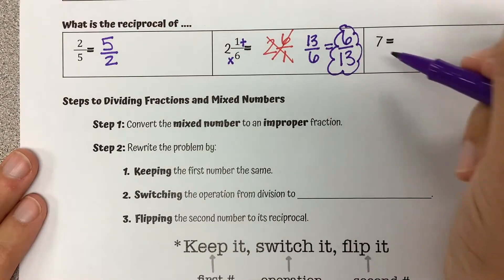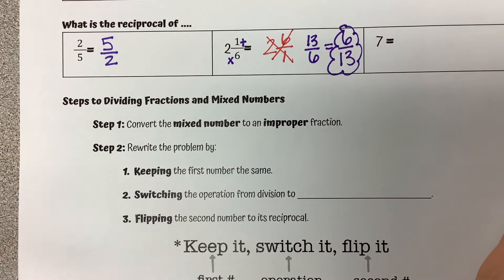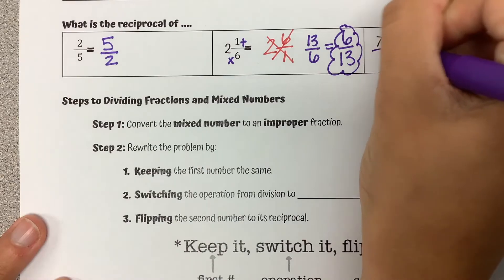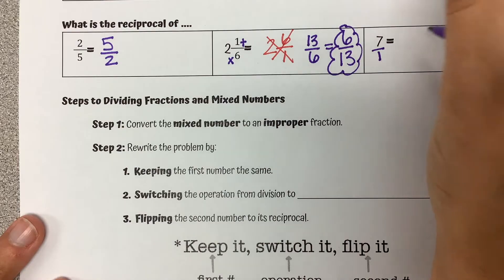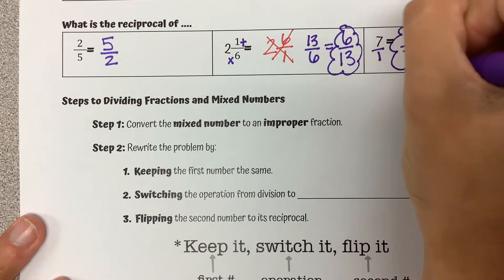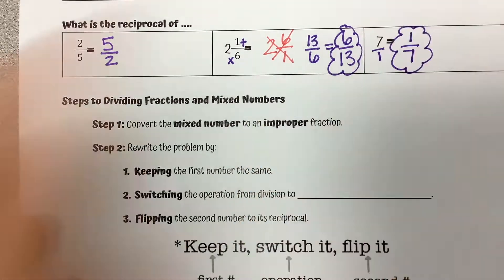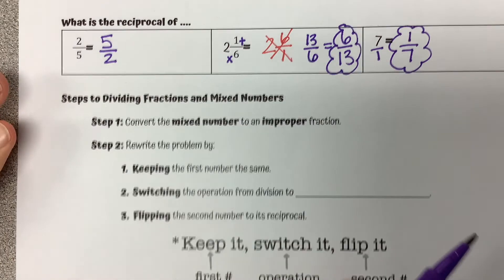For this last example, 7 is not a fraction, so we can't really flip it around. I need to write 7 as a fraction by writing it as 7 over 1. Now we can flip it around to 1 over 7. This skill is going to be really important with dividing fractions, which is why we practiced it on its own first.